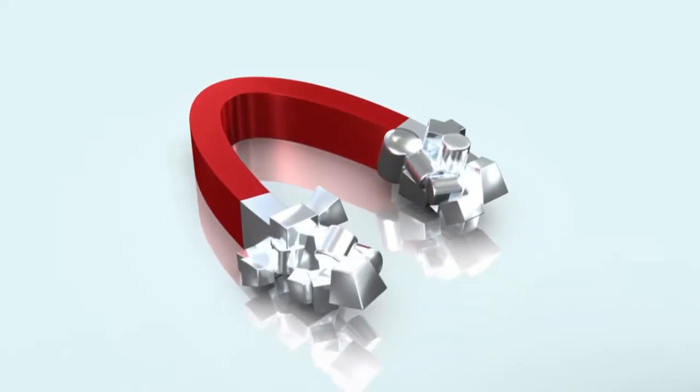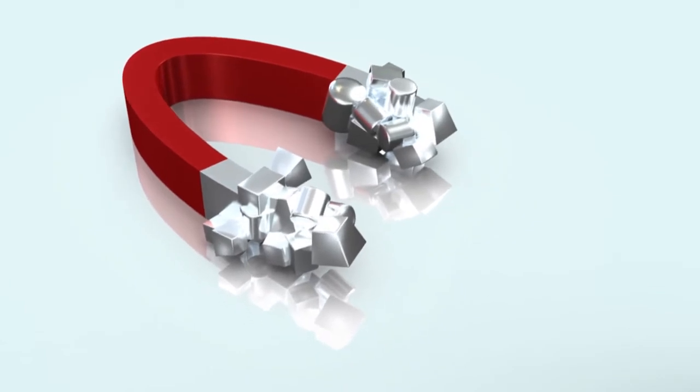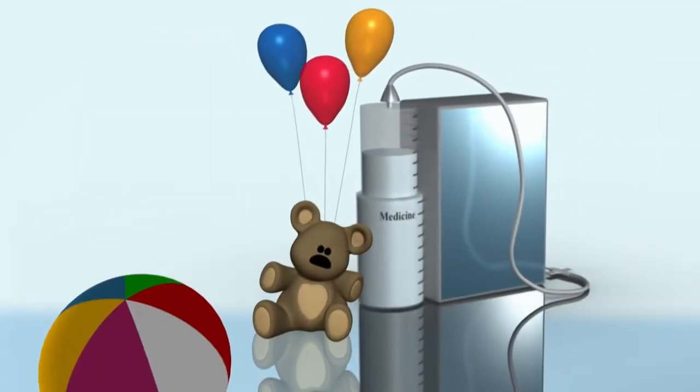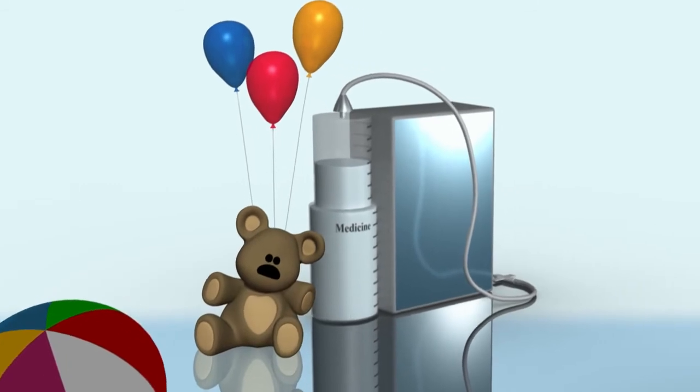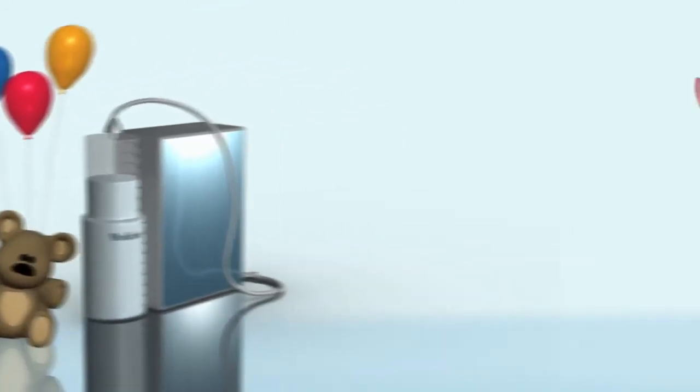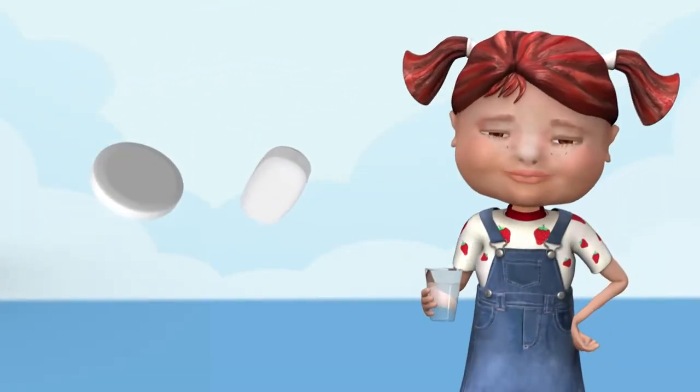There are different kinds of medicines that can take out the extra iron from your body. For one of these medicines, you will need the help of a needle and a pump. Other medicines are pills that can take the iron out of your body.